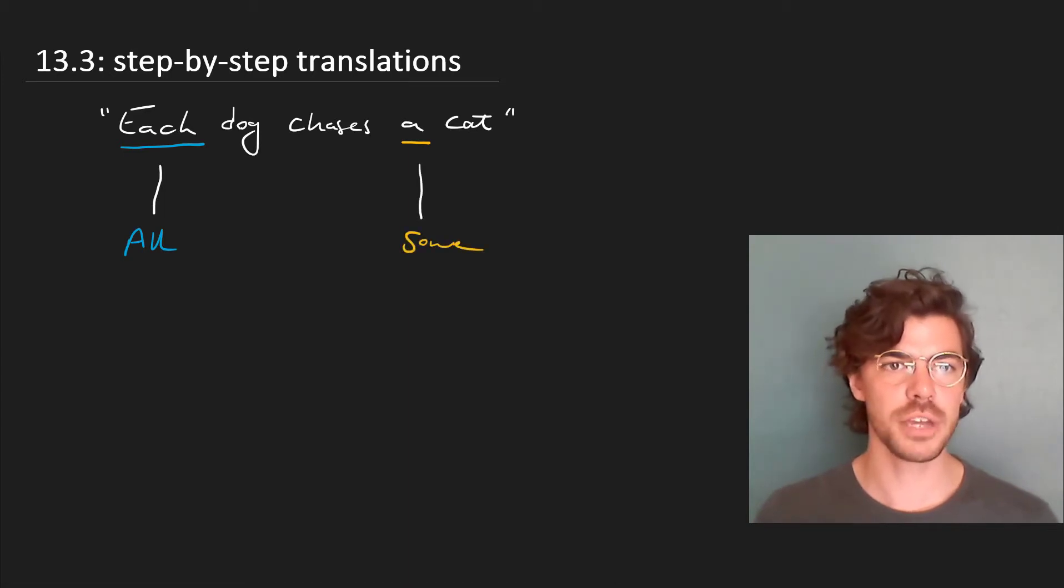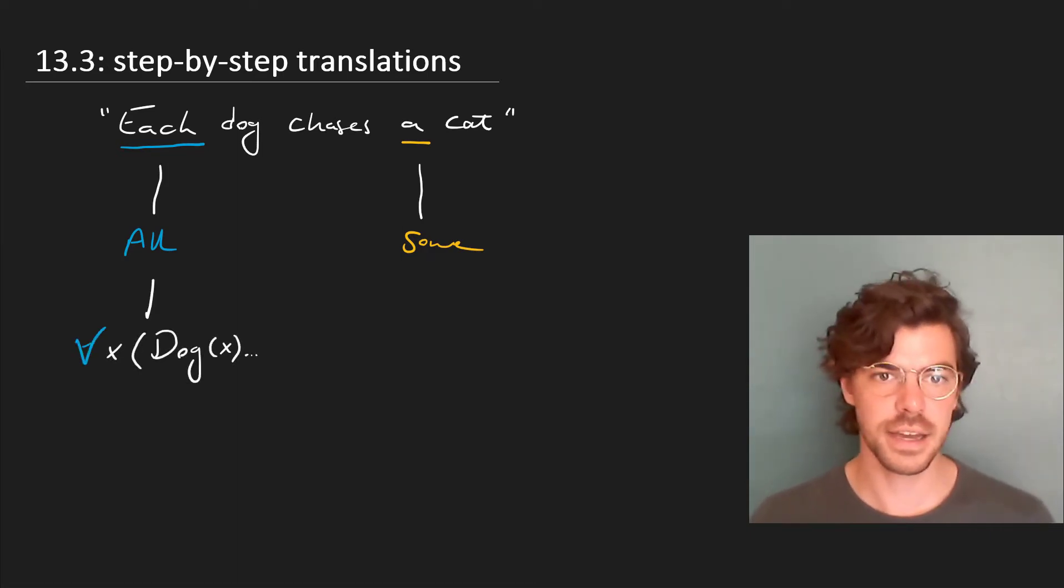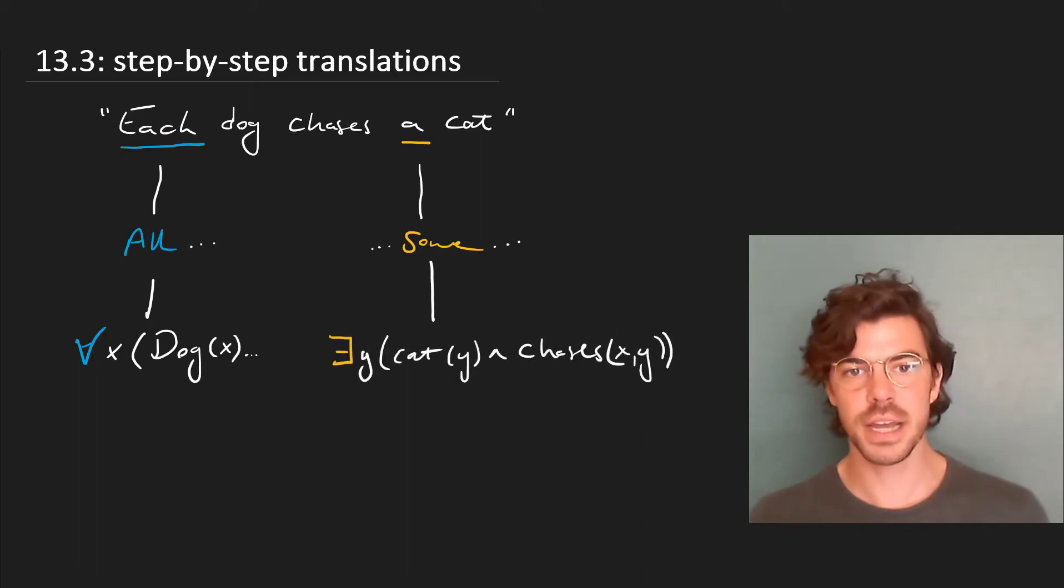Now that we have our quantificational terms isolated, we can start translating these in terms of their expressions and use the apparatus of FOL. So we'll say for every x, and then dropping this whole right-hand side down here, there exists a y that's a cat and x chases y.